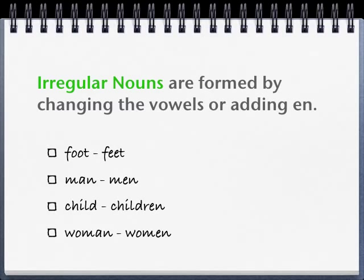Irregular nouns are formed by changing the vowels or adding EN onto the end of the word. For example, we say one foot but we say two feet — we change the vowels in the middle of the word from double-O to double-E to make it a plural, and a plural means more than one. Man changes to men. One child, several children — we add R-E-N at the end. Woman changes to women.